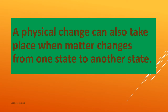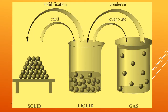A physical change can also take place when matter changes from one state to another. When a solid is melted, a liquid is formed. When a liquid is evaporated, a gas is formed. When a gas is condensed, a liquid is formed. When a liquid is solidified, a solid is formed. All these are physical changes. That means change of state is a physical change.